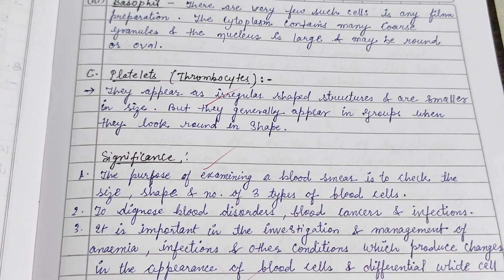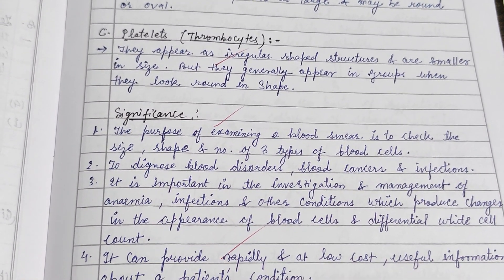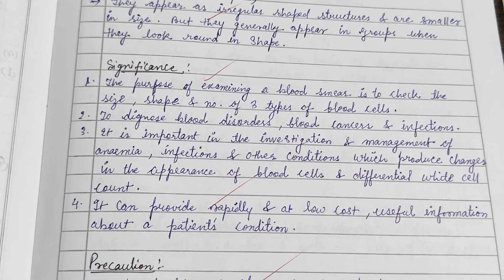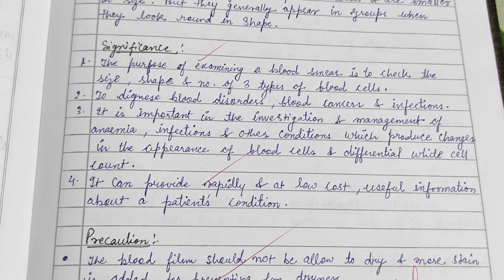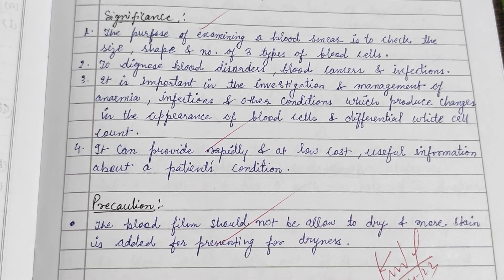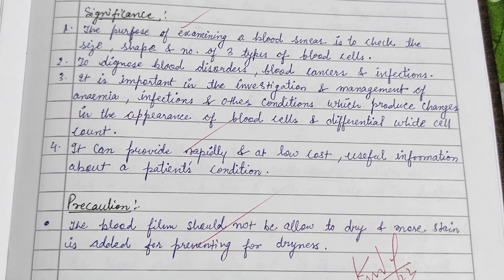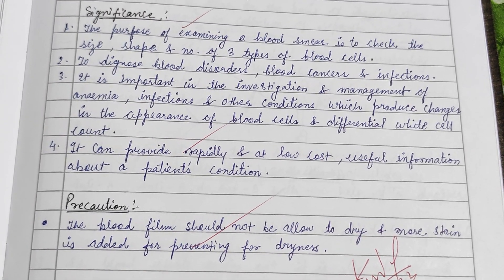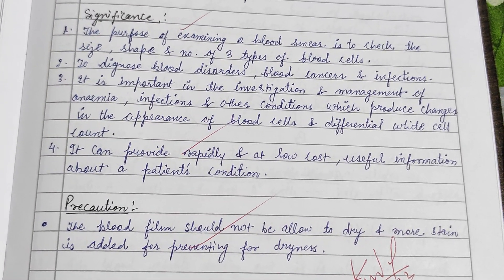The significance of this practical is that the purpose of examining a blood smear is to check the size, shape, and number of the three types of blood cells to diagnose blood disorders, blood cancer, infections, and other conditions which produce changes in the appearance of the blood cells, as well as for differential white cell count. Precaution: the blood film should not be allowed to dry, and more stain is added to prevent damage. Thank you, keep watching.